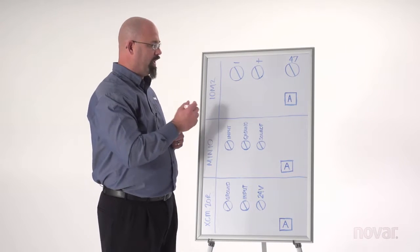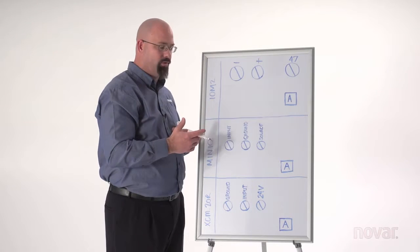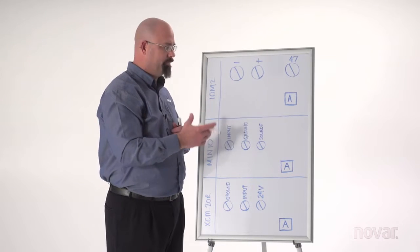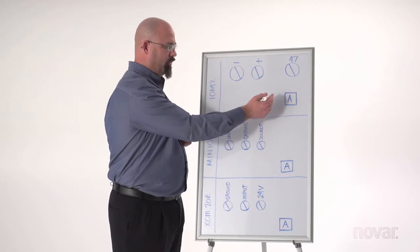So what we want to do is we want to run the NOVAR white wire from that analog output. It could be terminal signal out, it could just be called output, it could be called refrigerant out. Whichever the case that terminal is named, it's the signal coming back to our controller.